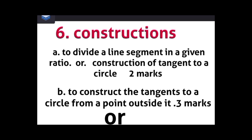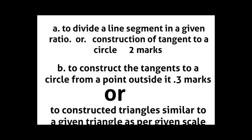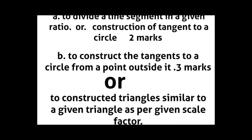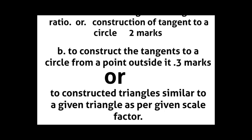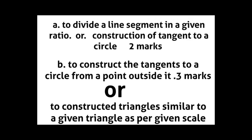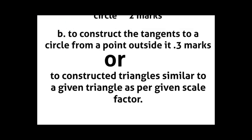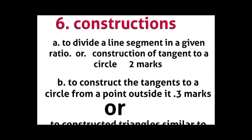In the sixth chapter, Constructions: dividing a line segment in a given ratio or constructing a tangent to a circle carries two marks. Constructing a tangent to a circle from a point outside it carries three marks, or constructing triangles similar to a given triangle as per a given scale factor carries three marks — either of one. Total five marks on constructions.